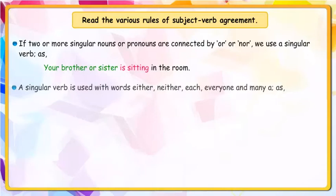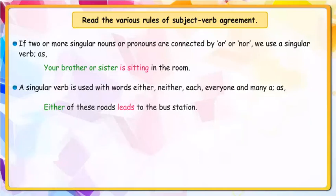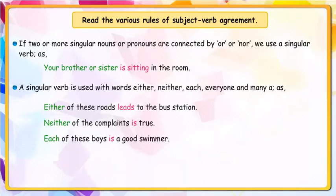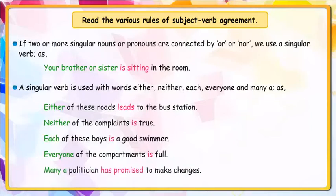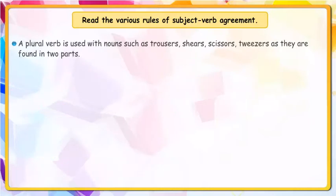A singular verb is used with words either, neither, each, everyone, and many a. For example: 'Either of these roads leads to the bus station.' 'Neither of the complaints is true.' 'Each of these boys is a good swimmer.' 'Every one of the compartments is full.' 'Many a politician has promised to make changes.'